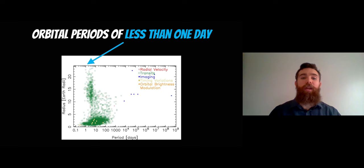Now an ultra short period exoplanet is a planet that has an orbital period of less than one day. So we can see that actually there are some planets that fall below that, so there are planets that have orbital periods less than one day and these are our ultra short period exoplanets.